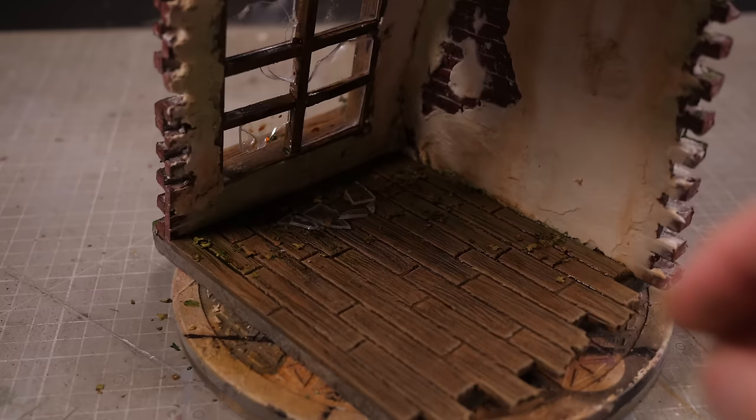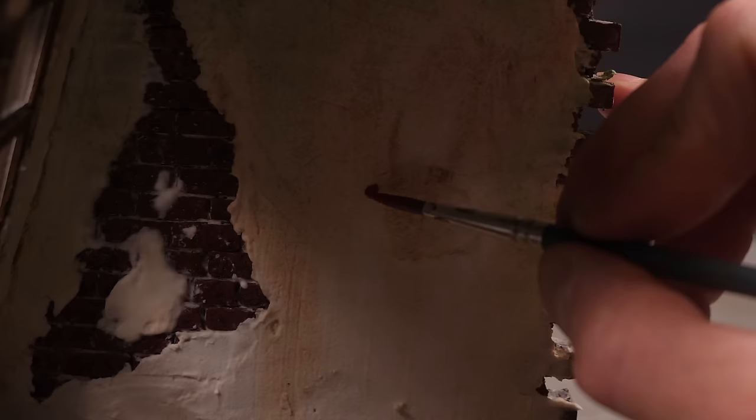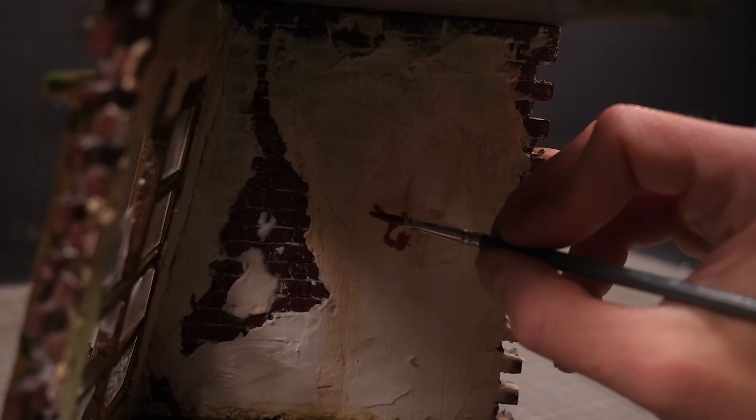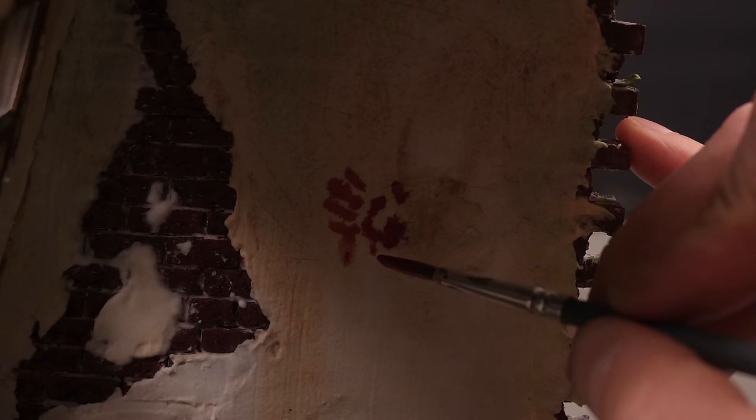I'll add some little bits of broken perspex around the windows as well as add some more leaves and detritus before finally adding a single bloody handprint on the wall. Except that my paint was perhaps a bit too thin and what was supposed to be streaky ends up looking more like a stain.